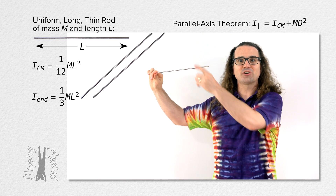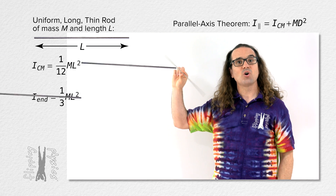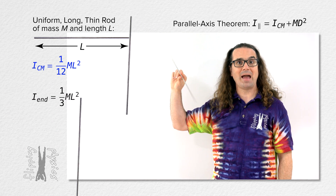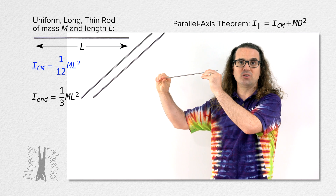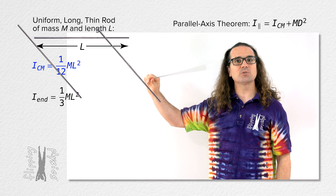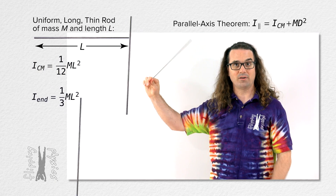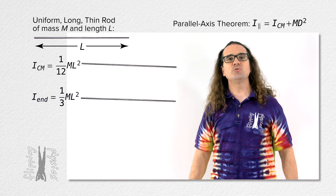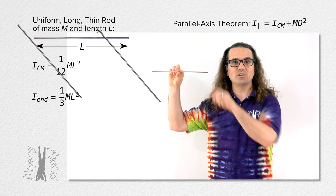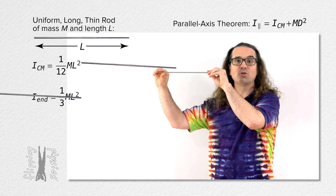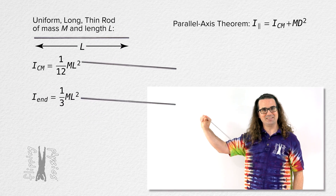The rotational inertia about the center of mass equals one twelfth total mass times the length squared, and the rotational inertia about one end equals one third total mass times length squared. Bo, please use the parallel axis theorem to derive the rotational inertia of a uniform long thin rod about its end.